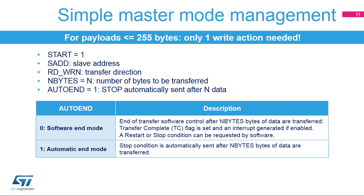If the auto end bit is not set, the end of transfer is managed by software. After the programmed number of bytes is transferred, the transfer complete (TC) flag is set and an interrupt is generated if enabled. Then a repeated start or a stop condition can be requested by software. The data transfer can be managed by interrupts or by the DMA.